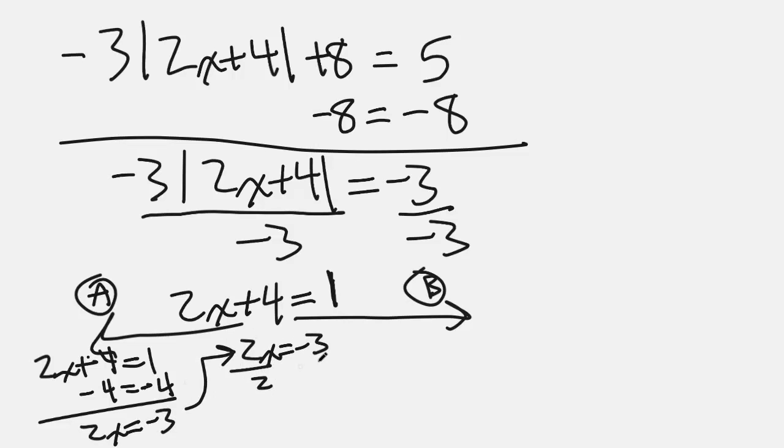Divide both sides of that by 2. I have x equals negative 3 over 2. Barely visible, I know. Please forgive me.